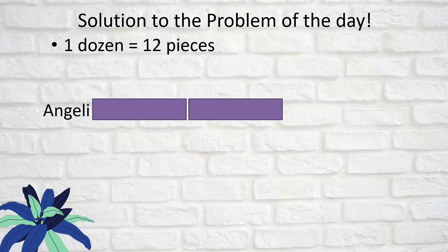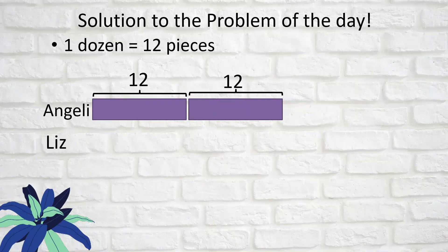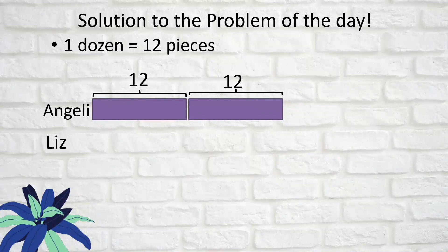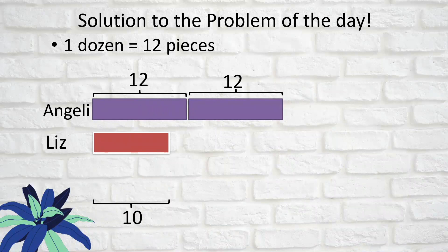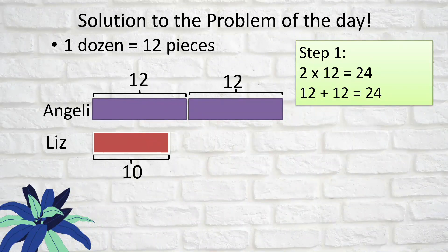Let's represent this with two bars, and one bar is 12 pieces — the value of one unit is 12 pieces. Liz bought 10 eggs, so we draw a bar a little smaller than Angeli's bar, representing 10. The first step is to find the total eggs bought by Angeli: 12 plus 12, or 2 times 12, equals 24.